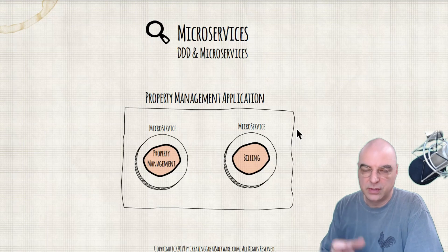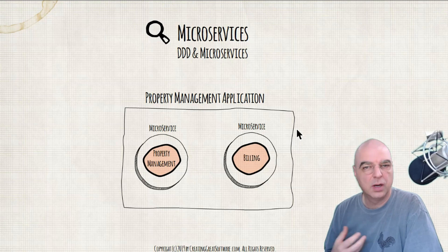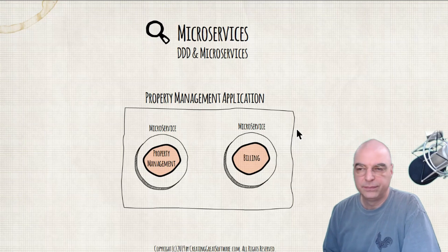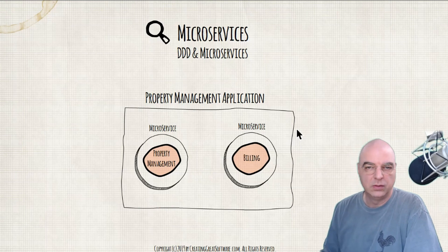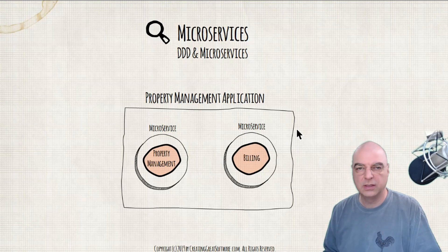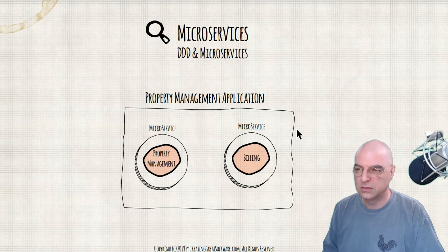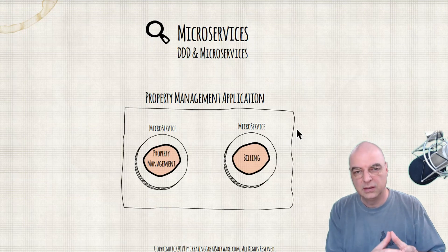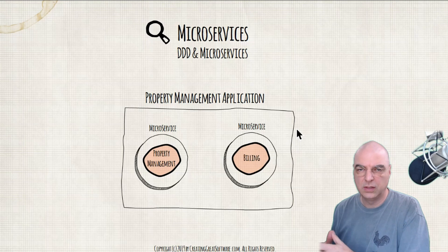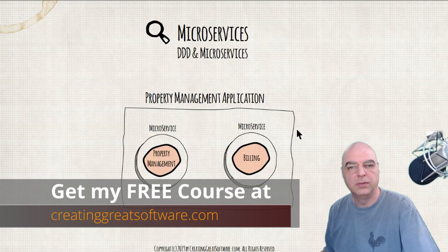One microservice deals strictly with property management, which is probably the core piece of a real estate software company — where you need to maintain information about tenants, property owners, work orders, a real-time ledger, and transactions. But you also need a way to collect tenants' money somehow. As a property management application, I may end up with two separate microservices. One deals with the property management side, the other strictly handles billing from a generic domain point of view. As a whole, I want to deliver a complete property management solution.